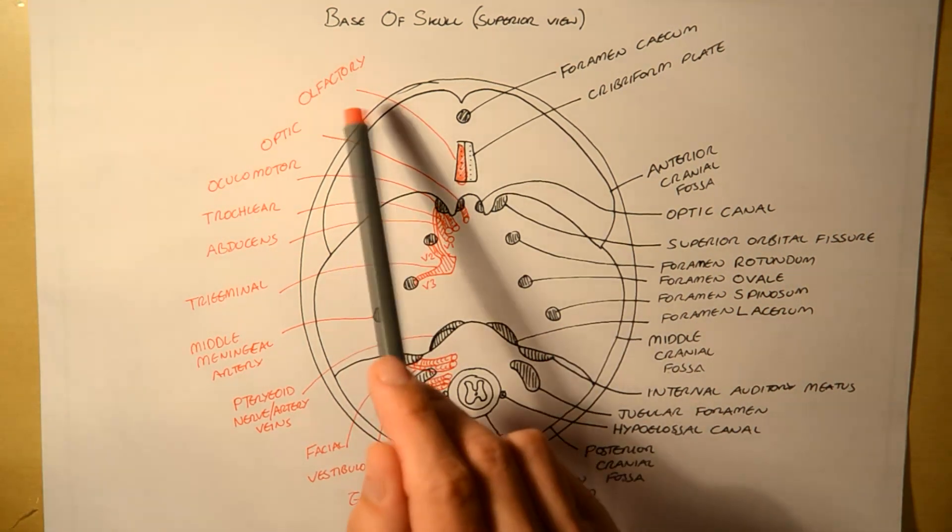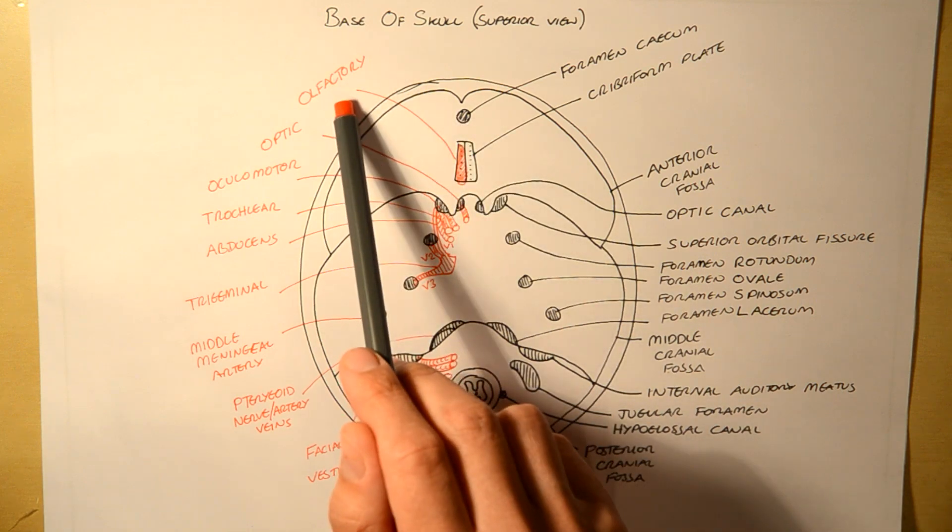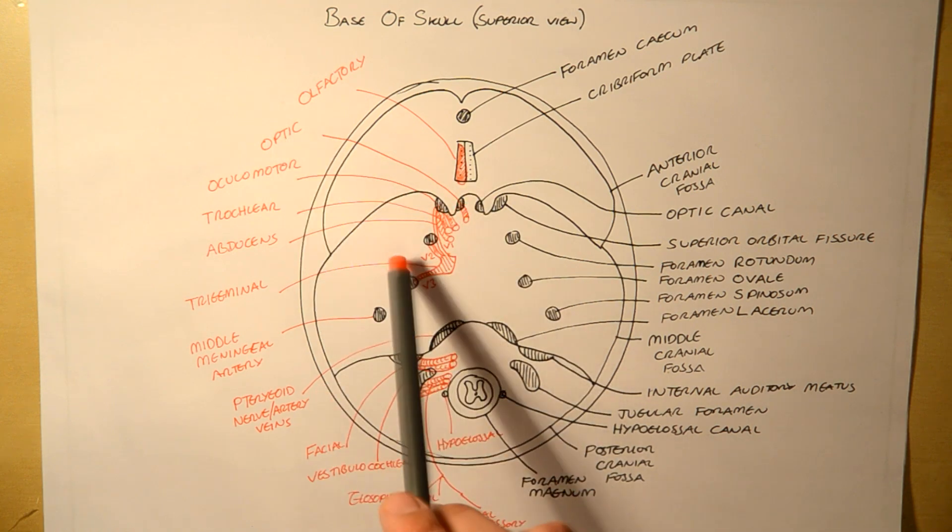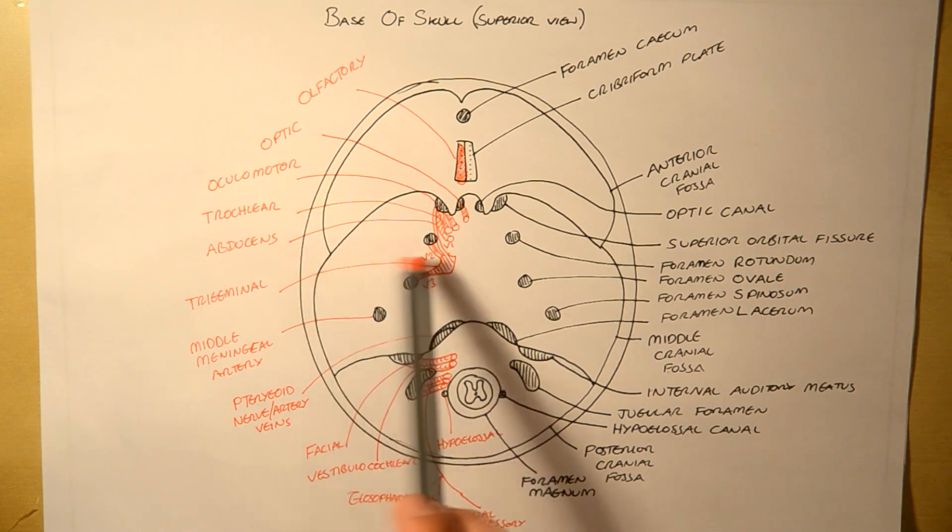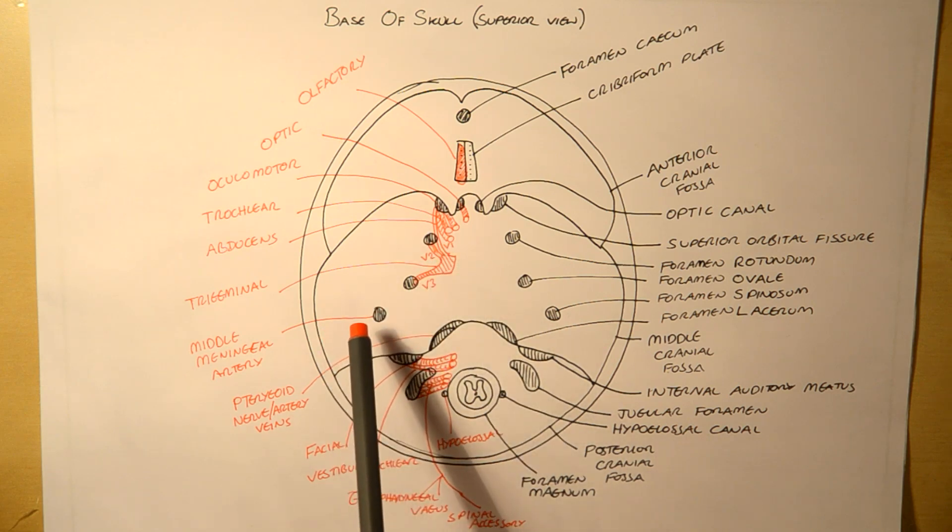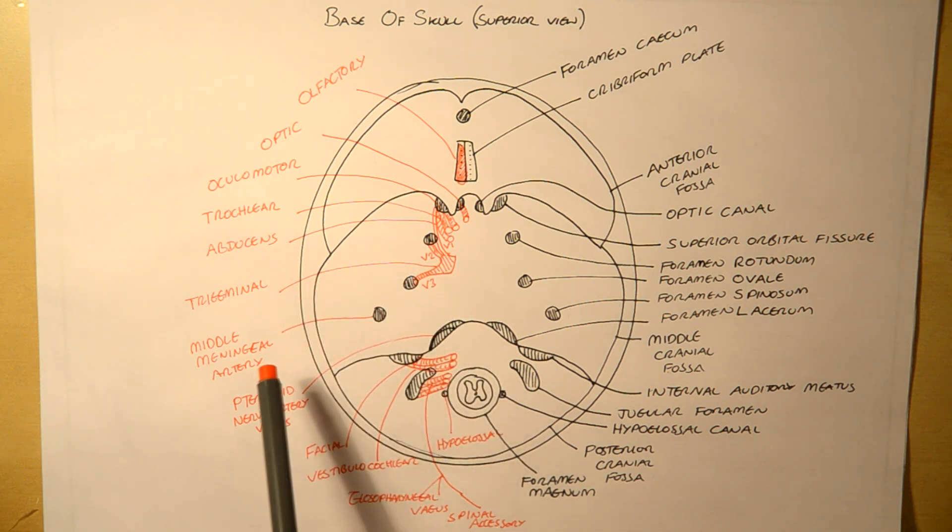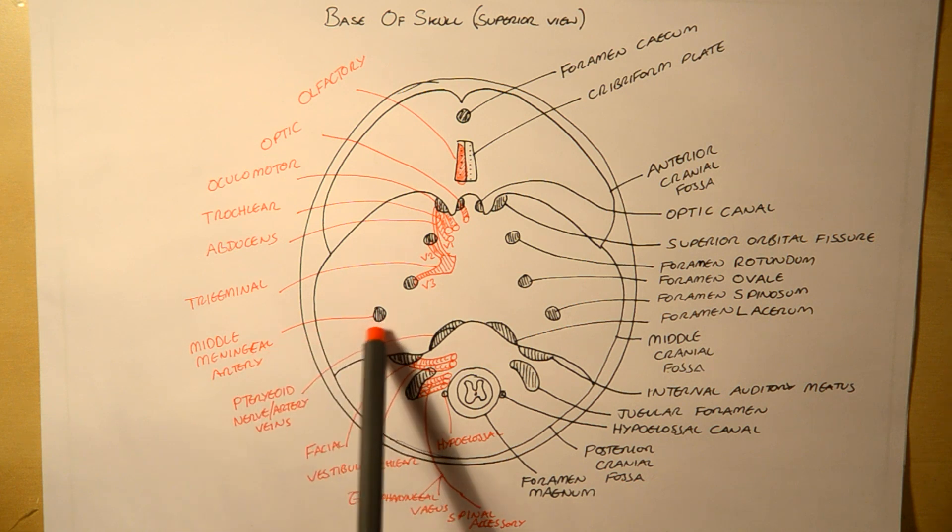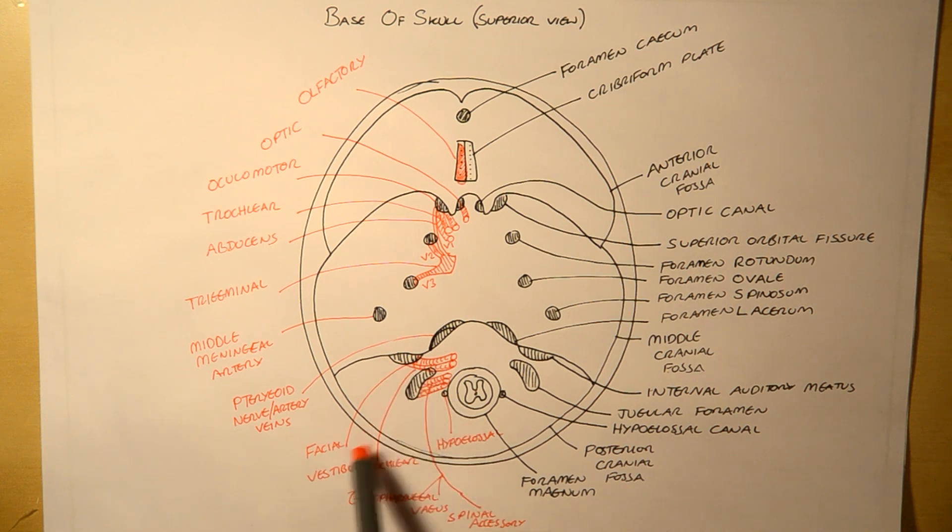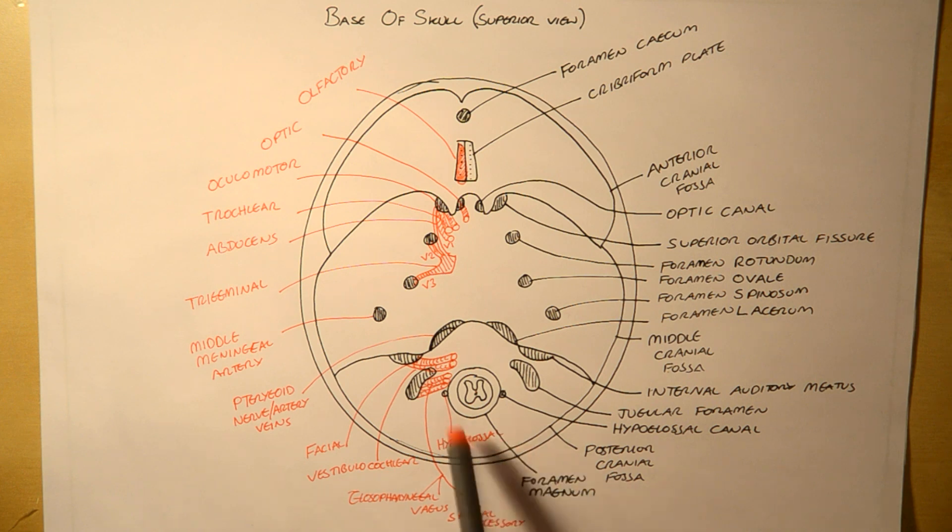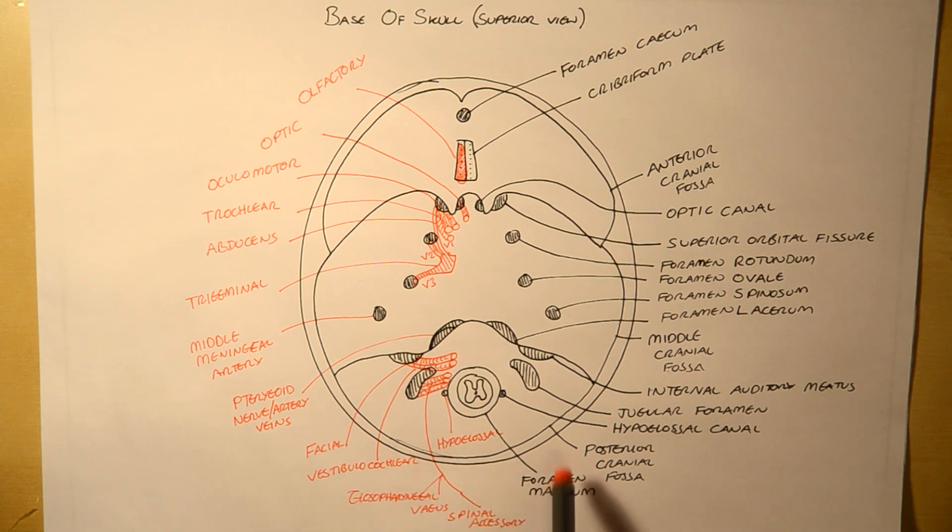So one more time. From the cecum, the cribriform plate where the olfactory nerve rests. Optic canal where the optic nerve exits. We've got the superior orbital fissure where the oculomotor, trochlear, and abducens, and the first branch of the trigeminal exit. We've got the foramen rotundum where the second branch of the trigeminal exits. The foramen ovale where the third branch of the trigeminal exits. The middle meningeal artery enters through the foramen spinosum. And the pterygoid artery and veins enter and exit, respectively, through the foramen lacerum. The internal auditory meatus houses the facial, the vestibulocochlear or auditory as some people like to call it. You've then got the jugular foramen which houses the glossopharyngeal, the vagus, and the spinal accessory. And the hypoglossal canal which houses the hypoglossal. And you've got the foramen magnum which has the spinal cord.